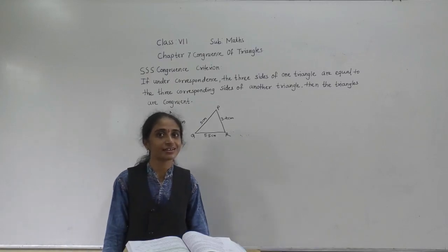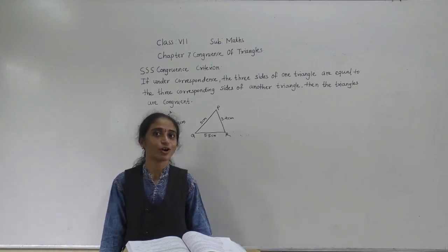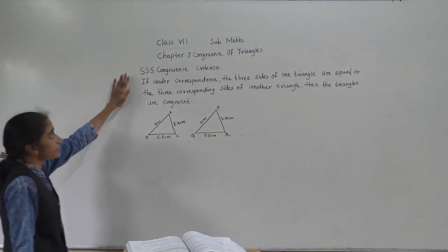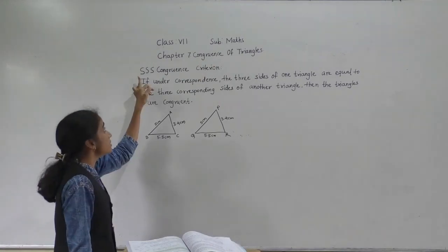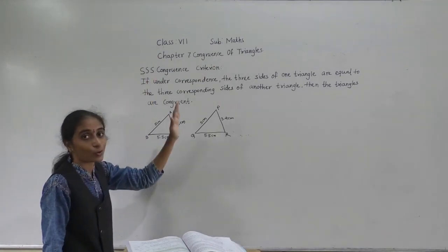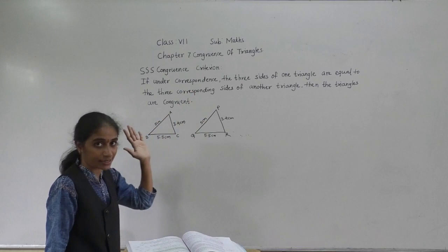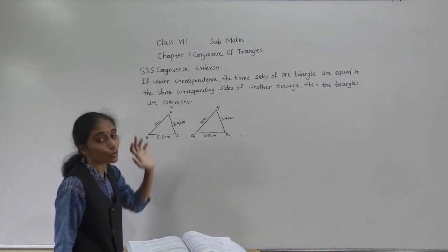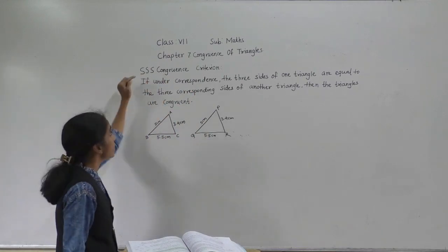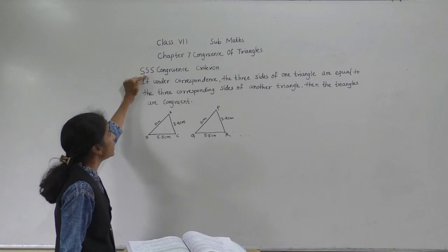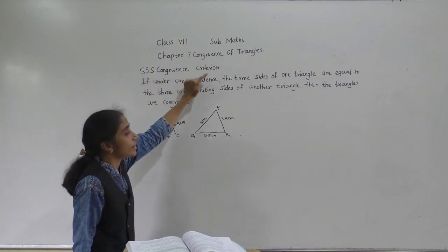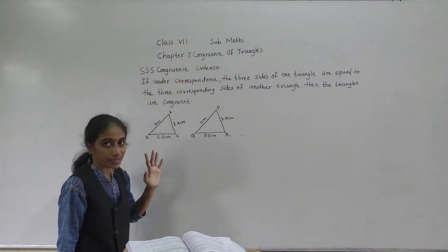Hello everyone, let's learn criteria for congruence of triangles. Now the first criterion is the SSS congruence criterion. SSS means side-side-side congruence criterion.